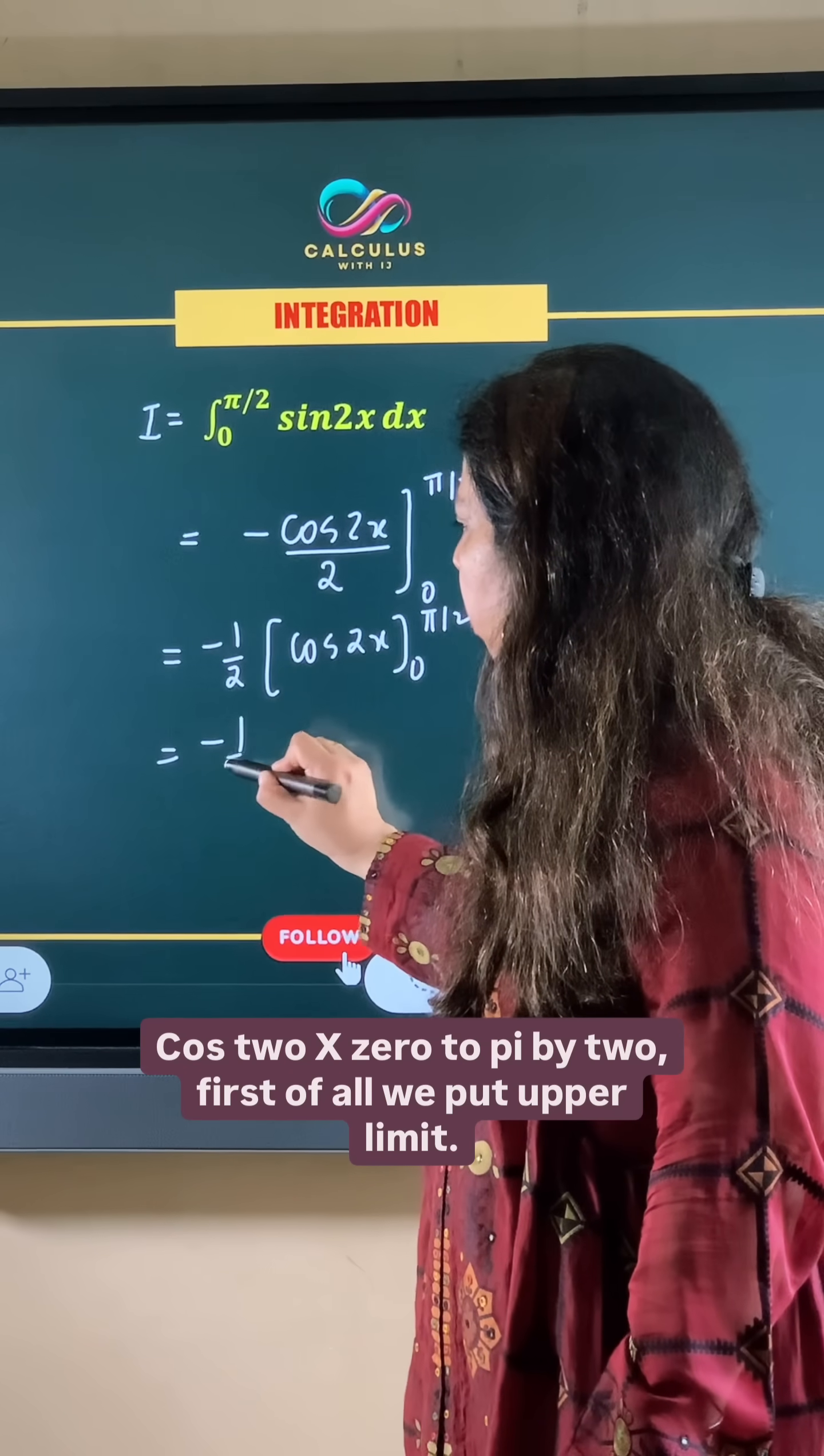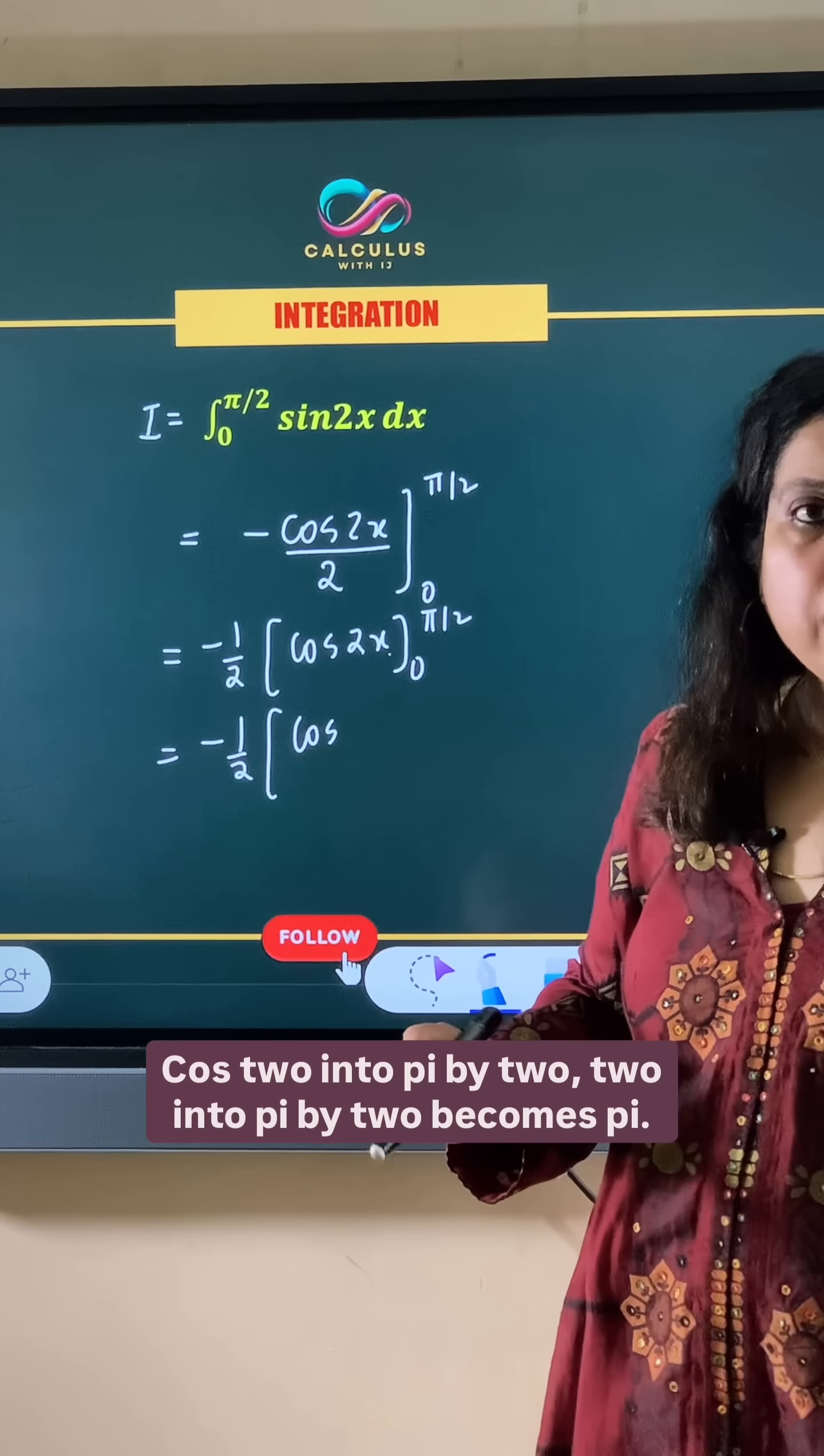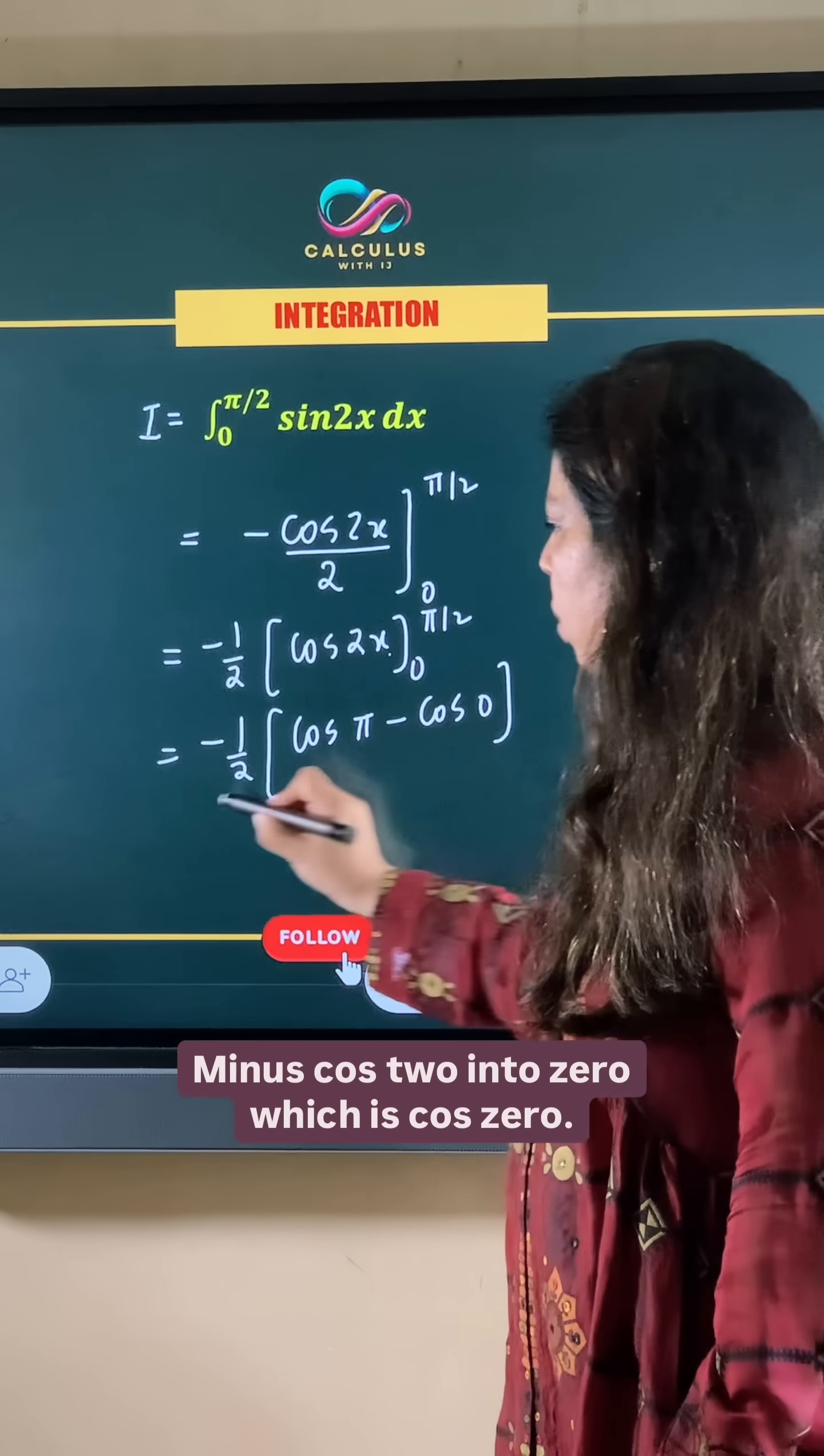First, we put the upper limit: cos(2 × π/2). 2 × π/2 becomes π, so it's cos π minus cos(2 × 0), which is cos 0.